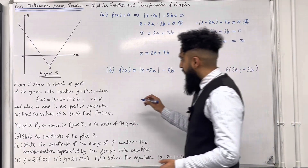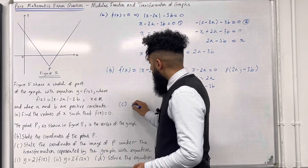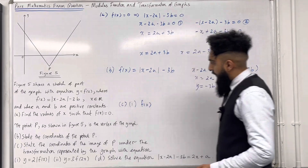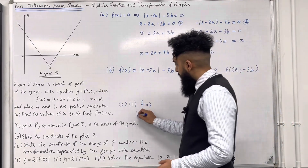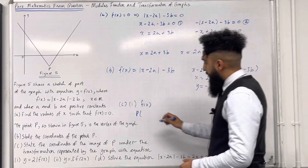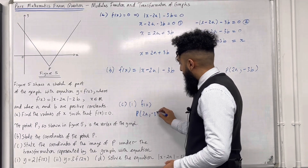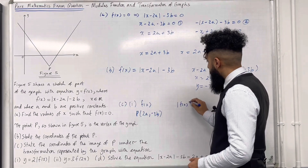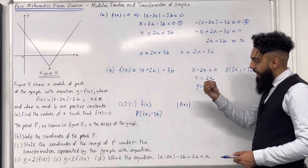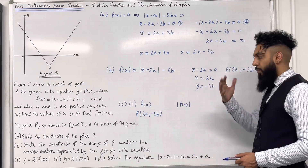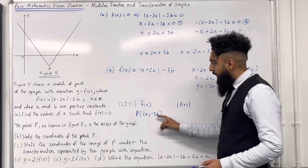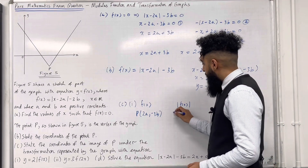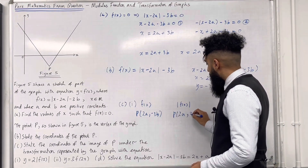Let's look at part C, part 1. We have f(x) with P at (2a, −3b). Applying the transformation |f(x)| reflects everything below the x-axis upwards, so the y-coordinate −3b becomes 3b. The image of P under |f(x)| is (2a, 3b).